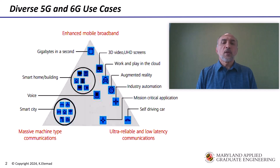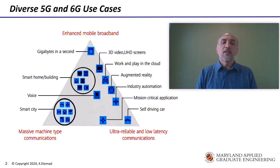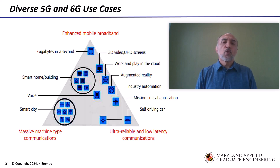In addition, 5G systems are designed to enable ultra-reliable and low-latency communication, which are important for some of the new verticals such as vehicle communication, mission critical applications, and some industrial IoT use cases. The third use case is massive machine type communication — being able to provide machine type communication with high density deployment of such devices in a network.